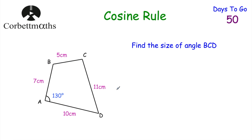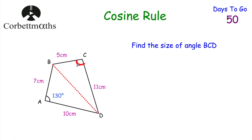For our last question, we've got a quadrilateral ABCD and we've been asked to find the size of angle BCD. You might think — it's a quadrilateral, not a triangle, so how can we use the cosine rule? But if we split it into two triangles by drawing the diagonal line BD, we get a triangle below and a triangle above. We'll use the cosine rule first to find the length of BD, then use it again to find the size of angle BCD.